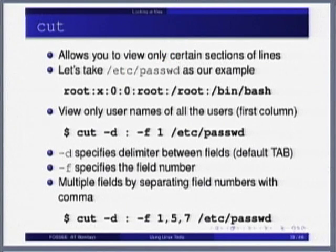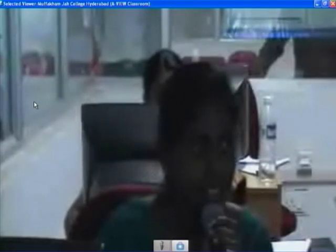Cut is extremely important. There is a question from Mofakamja College, Hyderabad: when we use 'tail minus f', we can append a line in a particular file - how do we save the appended line? That line has already been appended to bigger.txt. Bigger.txt is now a new file which has another line added at the end. The file has already changed and is already saved. Tail minus f is just showing - it is only monitoring, not modifying the file. It is just showing.